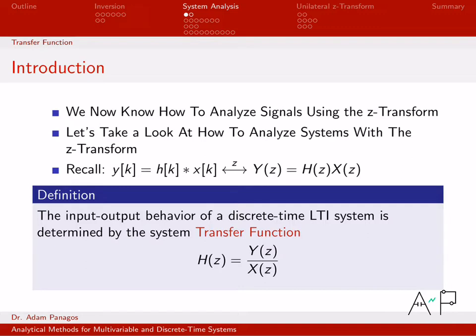We know in the time domain how the input and output of a discrete time linear system are related via the convolution input output equation. If you tell me the impulse response h(k) and the input signal x(k), I can compute the output y(k) by convolving those two signals, where that star is the convolution symbol.